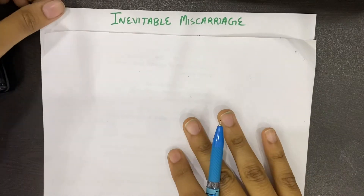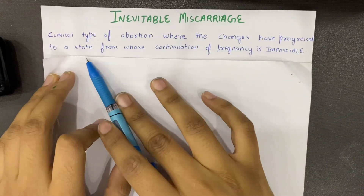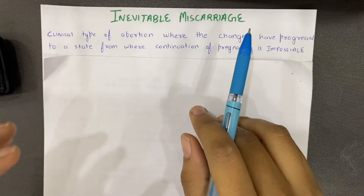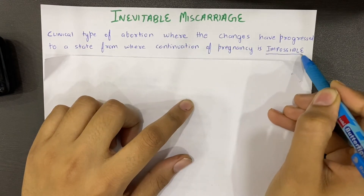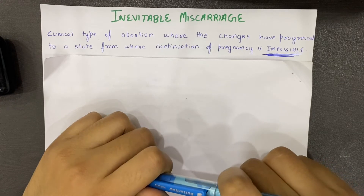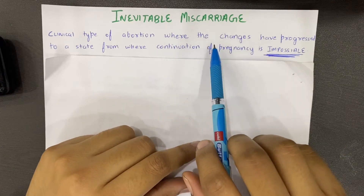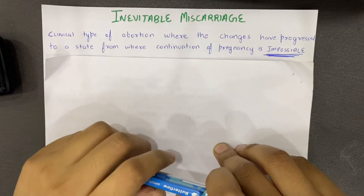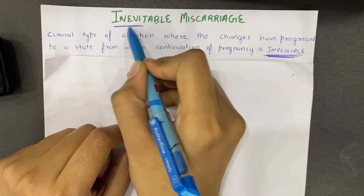So first of all, what is inevitable miscarriage? It is a clinical type of abortion where the changes have progressed to a state from where continuation of pregnancy is impossible. Inevitable miscarriage is the stage where changes have reached the point where pregnancy continuation is impossible and the pregnancy will terminate in abortion. Whereas in threatened miscarriage, which we studied earlier, the changes had not progressed to that state and there were chances that pregnancy could continue if detected early. But in inevitable miscarriage, as the name suggests, there are no chances of pregnancy continuation.